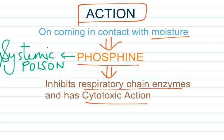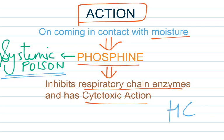It acts by inhibiting the electron transport chain, resulting from preferential inhibition of cytochrome oxidase. Phosphine is a systemic poison and affects all organs of the body. The chemical reaction is accelerated by the presence of HCl in the stomach.